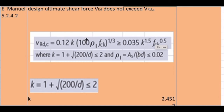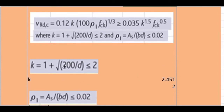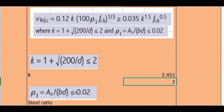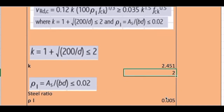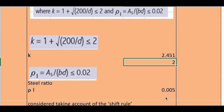Finding k: k = 1 + √(200/d) = 1 + √(200/95) = 2.451, but it must be less than 2, so I use k = 2. Finding the steel ratio ρ1 = As,provided / (b × d) = 448 / (1000 × 95) = 0.00471, which is less than 0.02, so we can use this value.